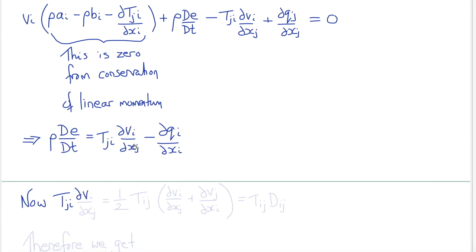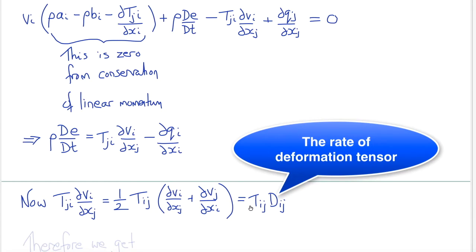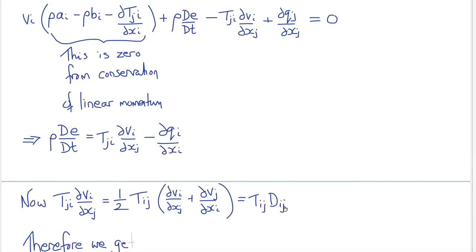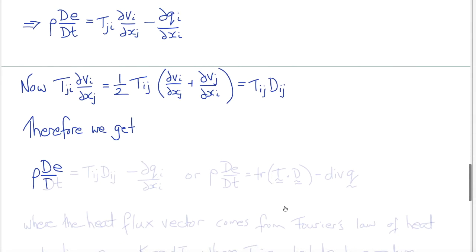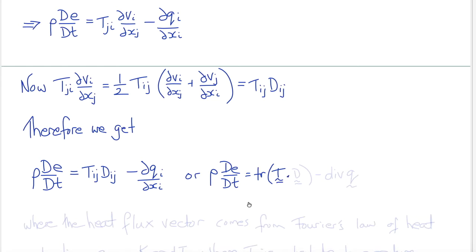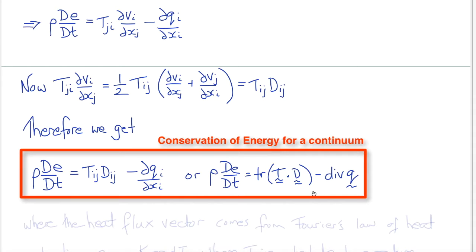Now, Tji del Vi/del xj can also be written as one-half Tij (del Vi/del xj plus del Vj/del xi) because the stress tensor is symmetric, and one-half (del Vi/del xj plus del Vj/del xi) is dij, the rate of deformation tensor. Therefore, the conservation of energy equation can also be written as rho times the material derivative of internal energy equals Tij dij minus del qi/del xi, or in direct notation, rho dE/dt equals trace(t · d) minus divergence of q.